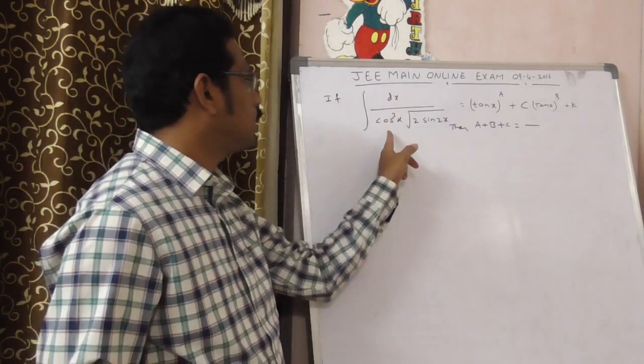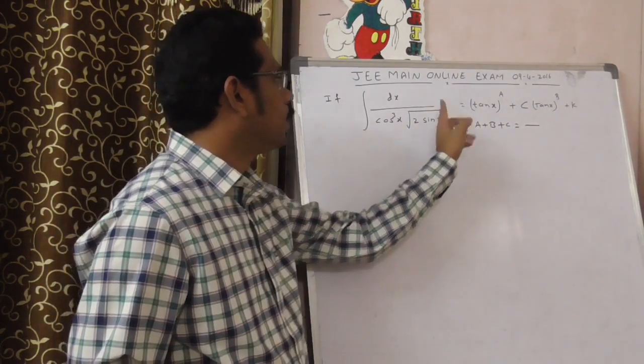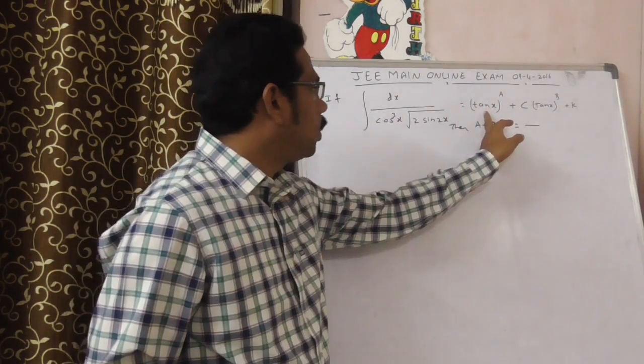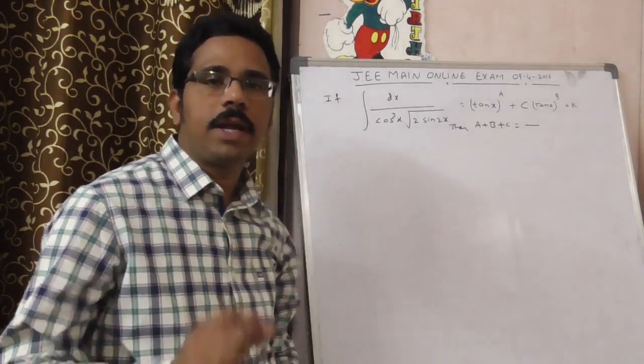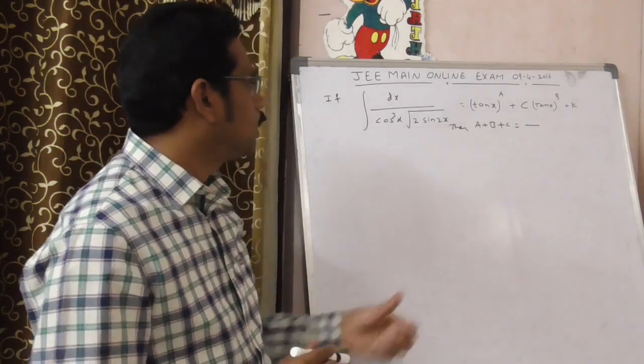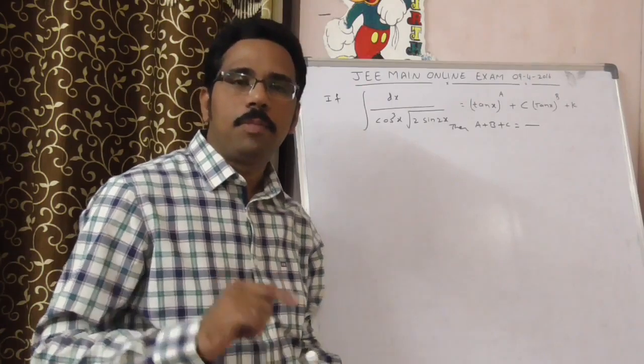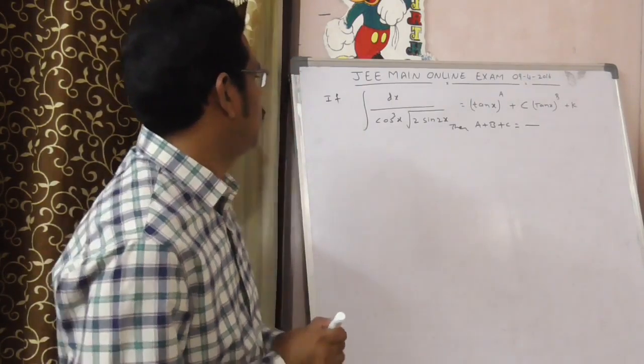Integral dx by cos cube x square root 2 sin 2x is equal to tan x power a plus c tan x power b plus k, where k is the integral constant. Then you have to calculate a plus b plus c.